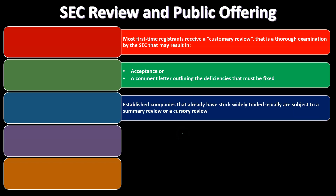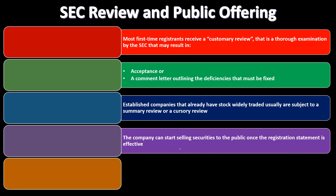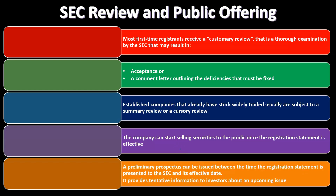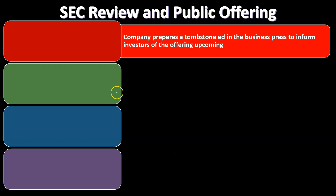Established companies that already have stock widely traded are usually subject to a less intensive summary or cursory review. The company can start selling securities to the public once the registration statement is effective. A preliminary prospectus can be issued between the time the registration statement is presented to the SEC and its effective date, providing tentative information to investors about the upcoming issuance.